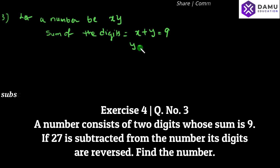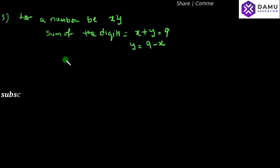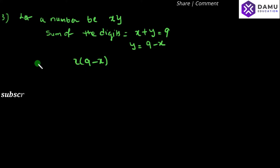Then y will be equal to 9 minus x. So the required number is x followed by (9 minus x). This is the number.